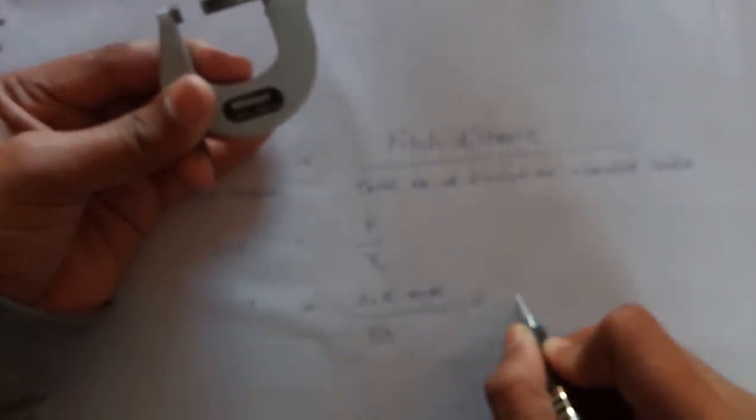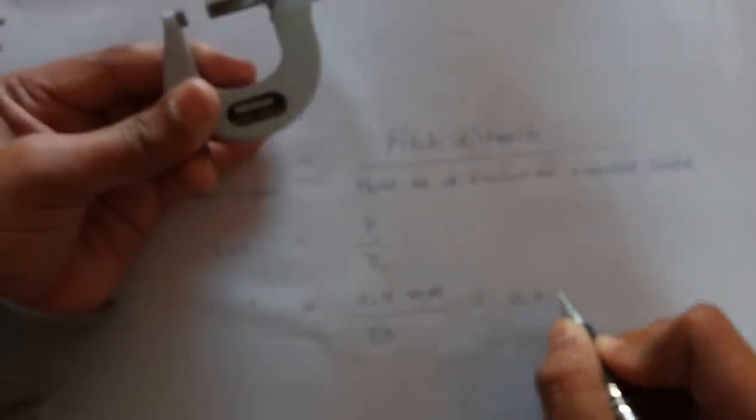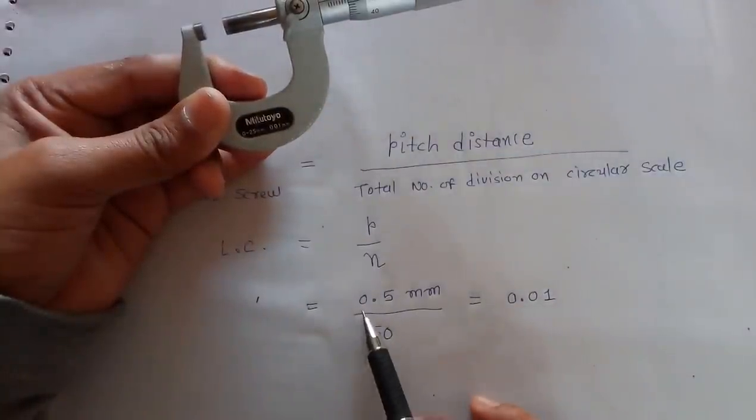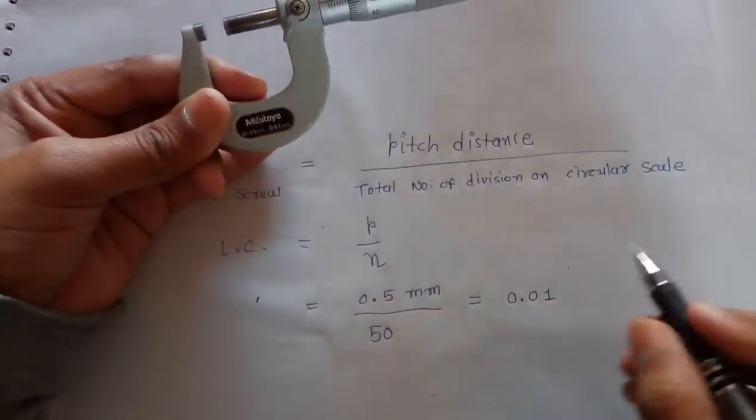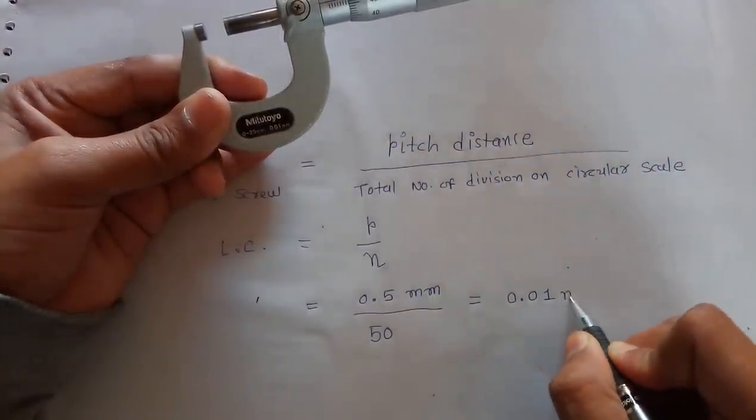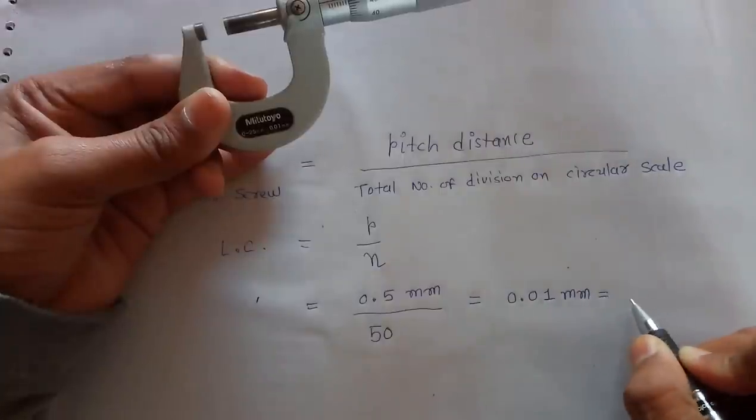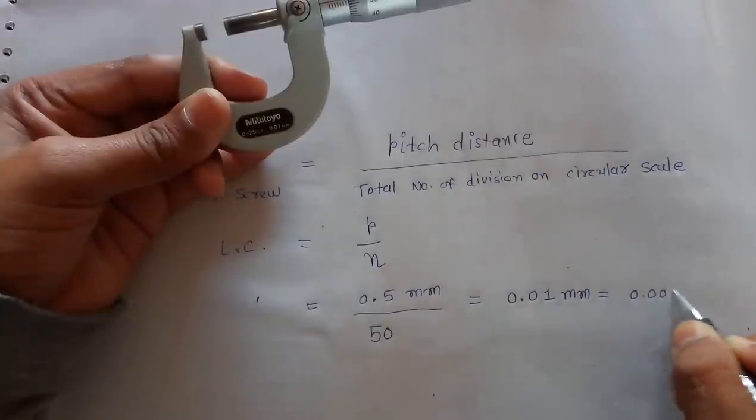So our least count is 0.01mm. So 0.5mm by 50 is equal to 0.01mm. We can say that 0.001cm.